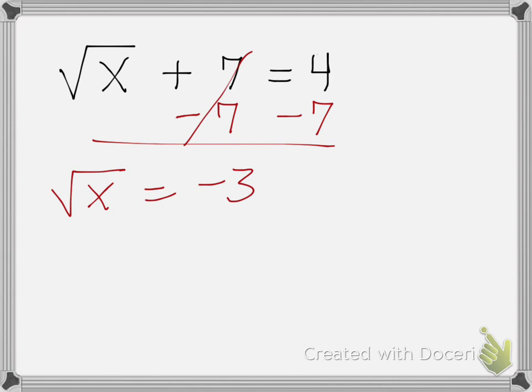To get rid of the square root, I'll raise it to the power of 2. Whatever I do to one side, I will do to the other. It will cancel out my square root. So, I'll bring down my x. Negative 3 squared. Make sure you put the parentheses around negative 3 in your calculator. Negative 3 squared equals 9.